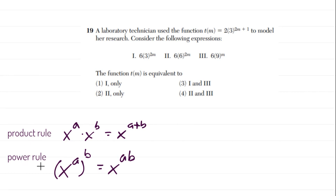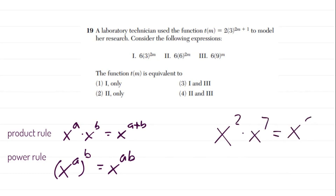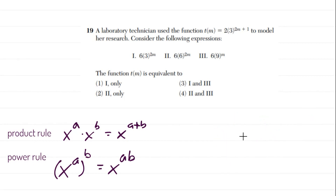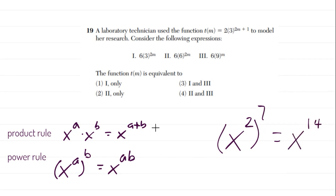The product rule tells us: if I have two exponents with the same base and I multiply them, it's just the same base raised to the sum of those two exponents. For example, x squared times x to the seventh equals x to the ninth. That's the product rule — it only applies when the bases are the same. The second rule is the power rule: x squared raised to the seventh power is the only time we actually multiply the exponents, giving x to the 14th power.